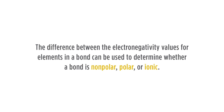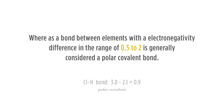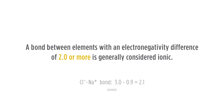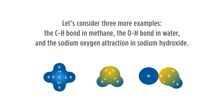The difference between the electronegativity values for elements in a bond can be used to determine whether the bond is nonpolar, polar, or ionic. As a general rule, a bond between two elements with an electronegativity difference of 0.5 or less is generally considered a nonpolar covalent bond. A bond between elements with an electronegativity difference in the range of 0.5 to 2 is generally considered a polar covalent bond. A bond between elements with an electronegativity difference of 2.0 or more is generally considered ionic. It is important to understand that this is a general rule.